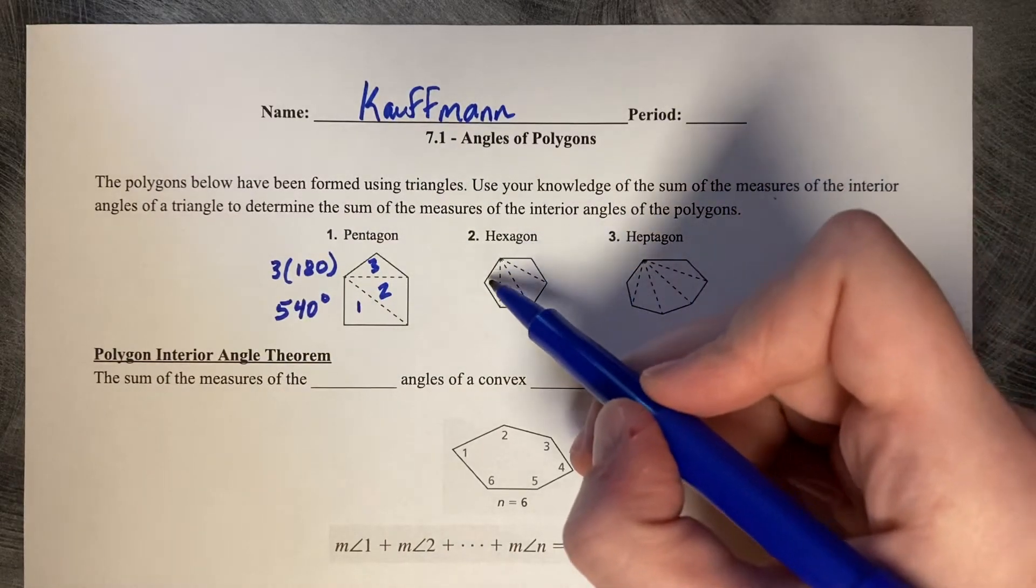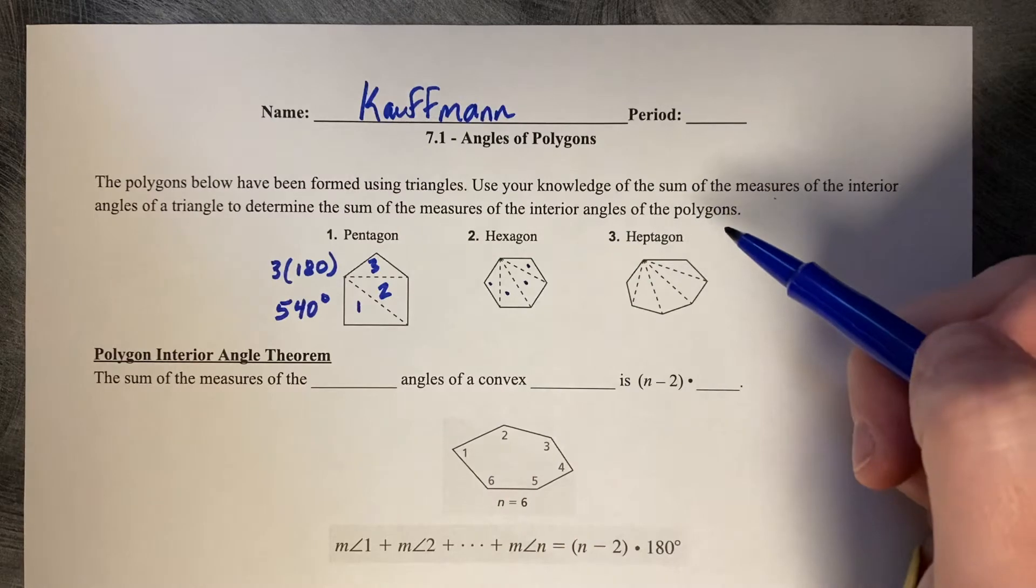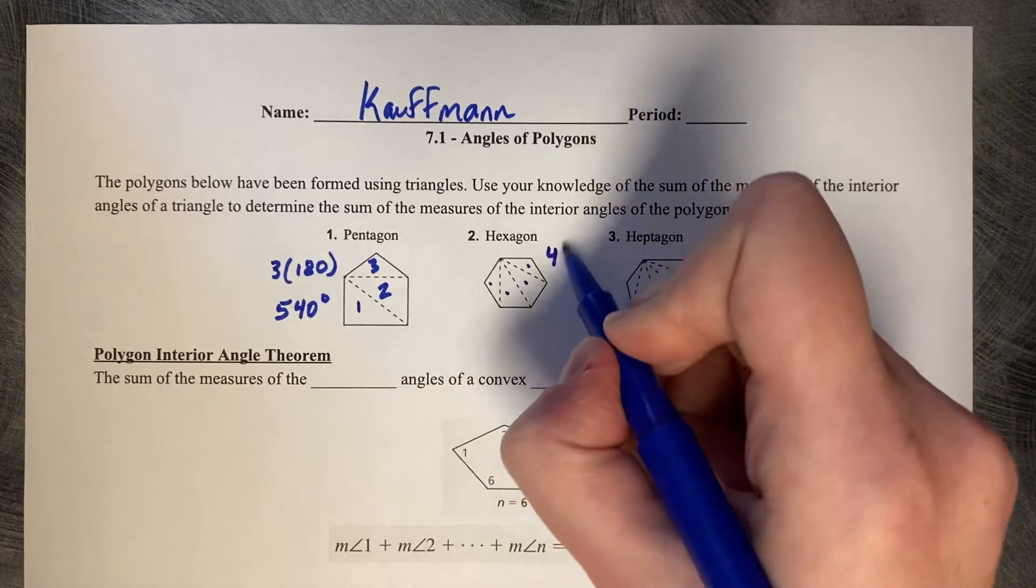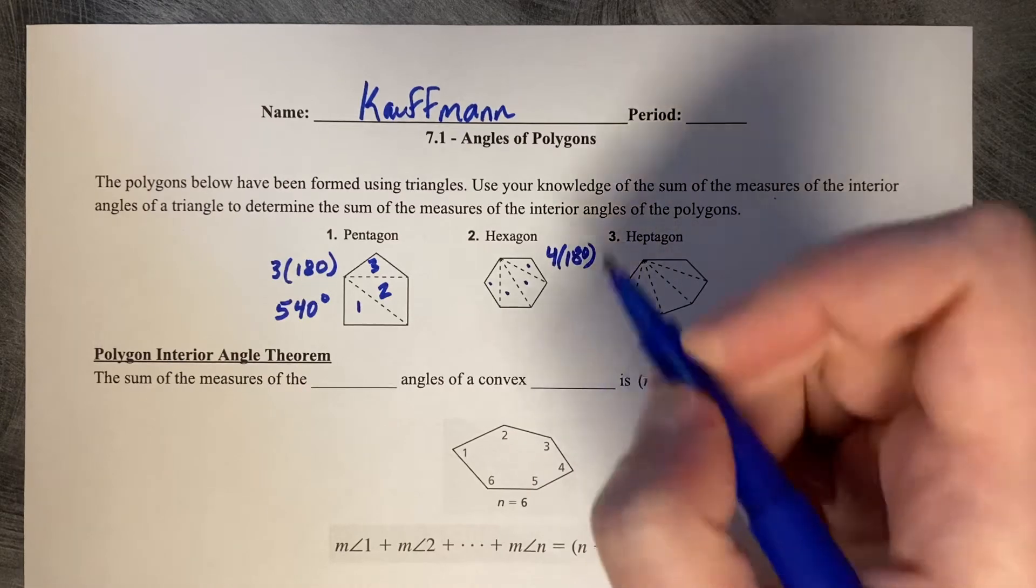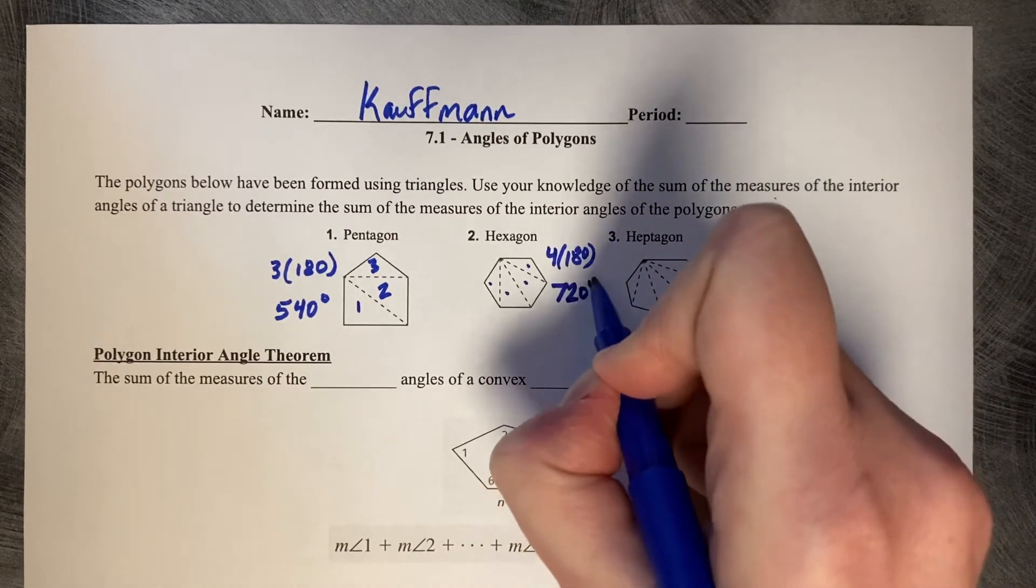Okay, here's a hexagon. One, two, three, four triangles. So four times 180 degrees and that is going to be 720 degrees.